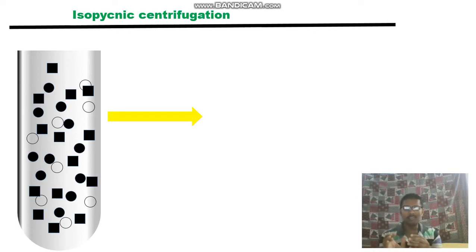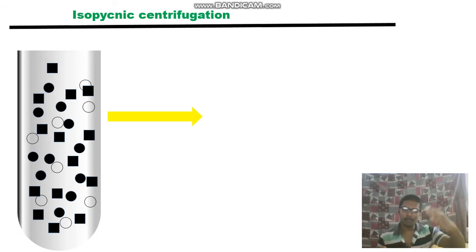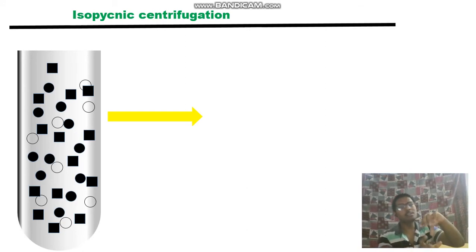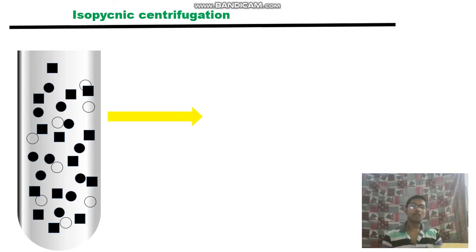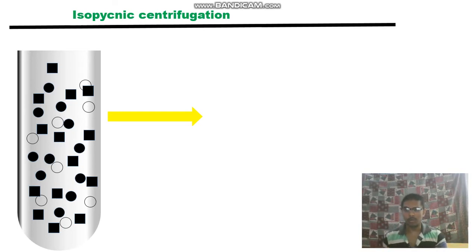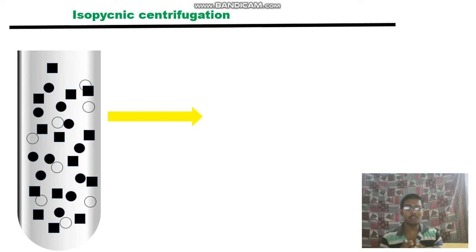In isopycnic centrifugation, particles are separated in a zone where the density of the particles is exactly equal to the density of the surrounding medium. A particle moves through the density gradient until it finds a position where its density matches that of the surrounding solution — then it stacks there. Another particle of different density will move and stack at its own matching density zone.